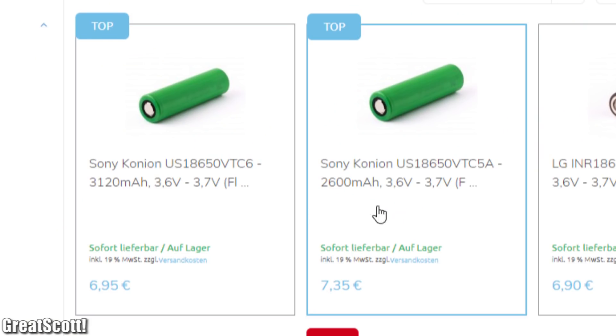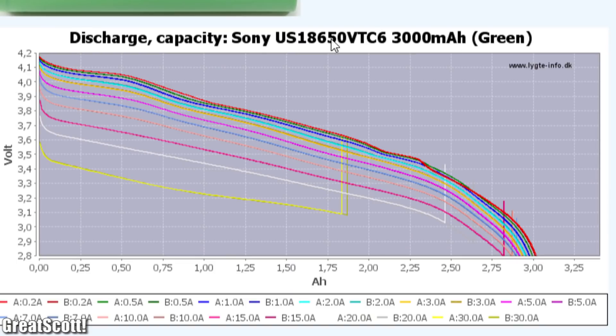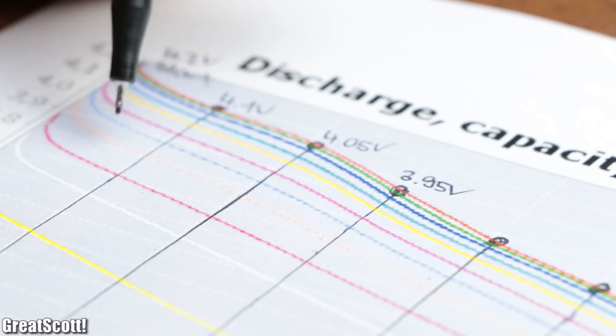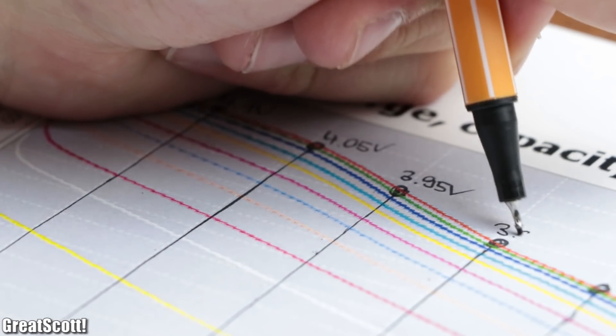Of course, if you use a different battery type, you should also have a look at their discharge curve to set the correct voltage values in order to get a pretty accurate battery level indicator.